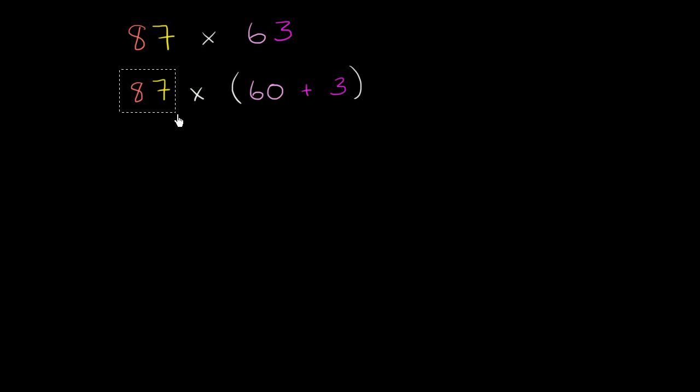Well, 87 times 60 plus 3, that's going to be the same thing as 87 times 60 plus 87 times 3. You could say that we've just distributed the 87. We're multiplying 87 times 60 plus 3, that's 87 times 60 plus 87 times 3.